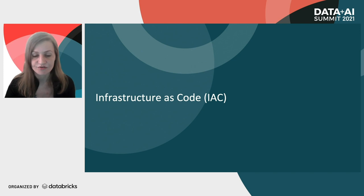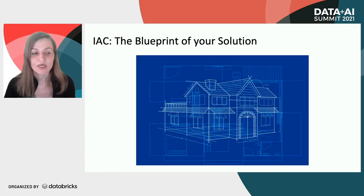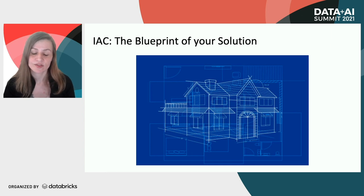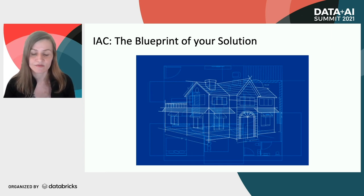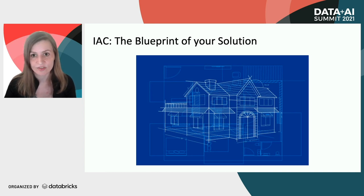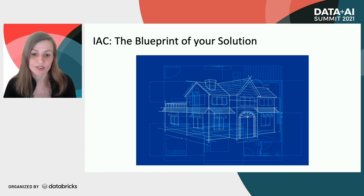Infrastructure as code — IaC — is essentially the blueprint of your solution. It's writing down how you want your solution to be structured: what services you want to use, what databases, what data lake storage solution you want to use. That's all defined in your infrastructure as code.